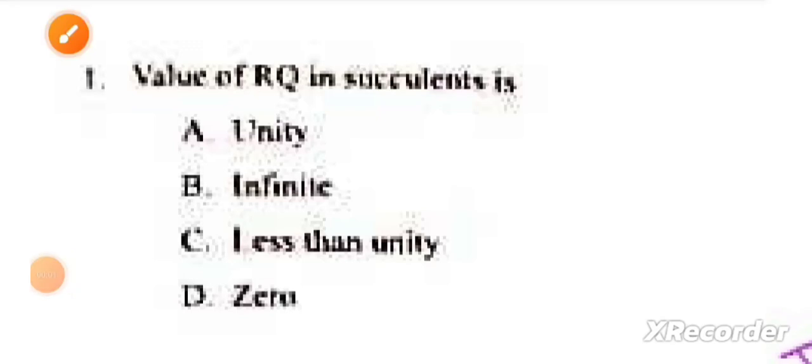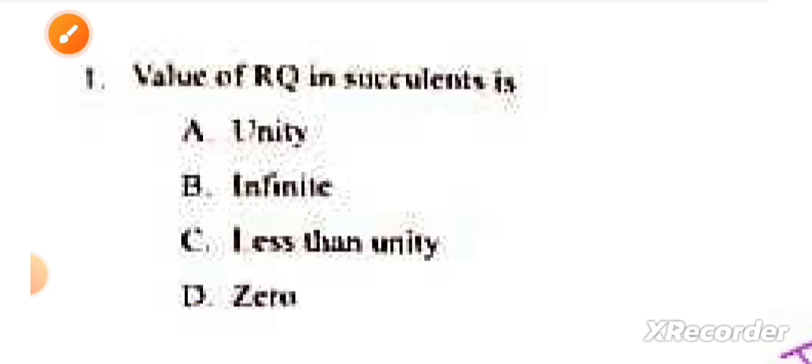Question number 1: What is the value of RQ in succulents? This answer is D, 0. Next question: Bud dormancy is induced by? This answer is C, ABA.